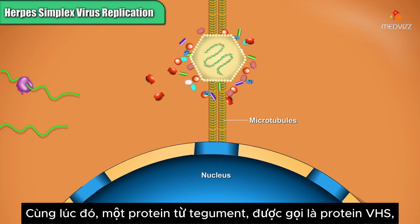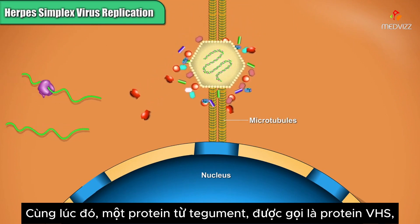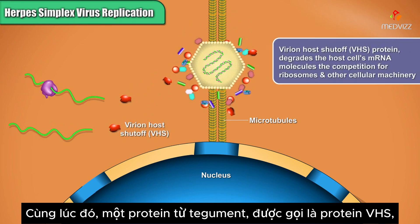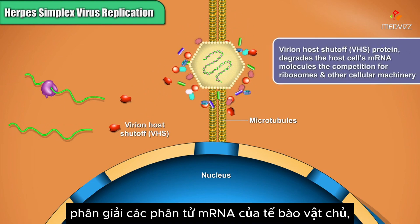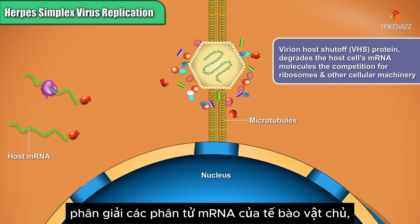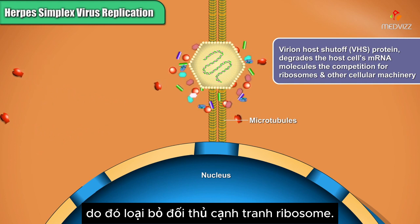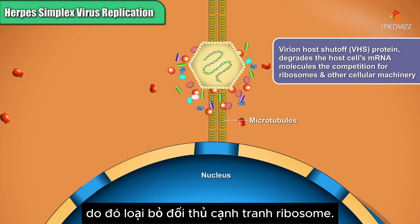At the same time, a protein from the tegument called virion host shutoff, or VHS protein, degrades the host cell's mRNA molecules, and thereby eliminates the competition for ribosomes and other cellular machinery.